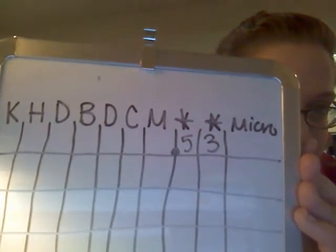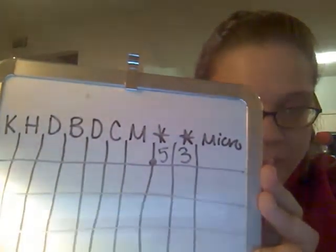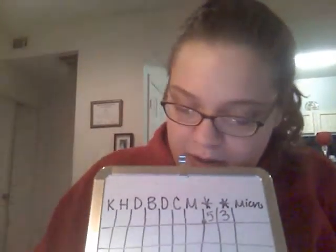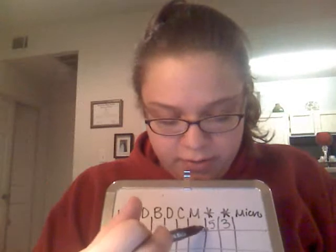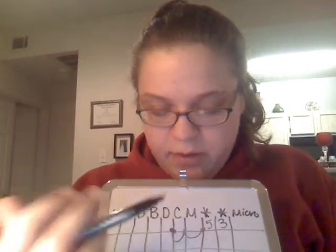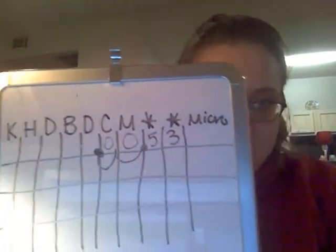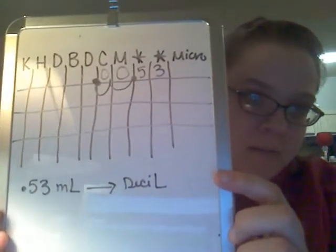So if it was 1.53 milliliters, you would put the 1 in front of the point. We're going to go to deciliters, so you're going to move your decimal place down here, which is your deciliters. You move it one, two decimal places because your point goes right after the D. And then all you do is add your zeros, and that is your answer. 0.0053 deciliters is the equivalent of 0.53 milliliters.